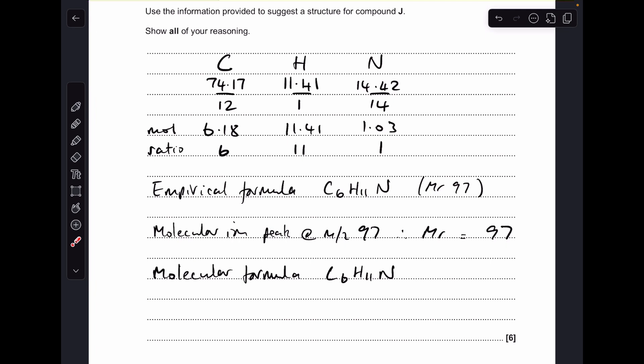Then we just need to bring in the fact that the molecular ion peak is at M/Z 97, which means the MR of the molecule is 97, which means that the molecular formula is also C6H11N. So we've just got to tell that story in our answer.